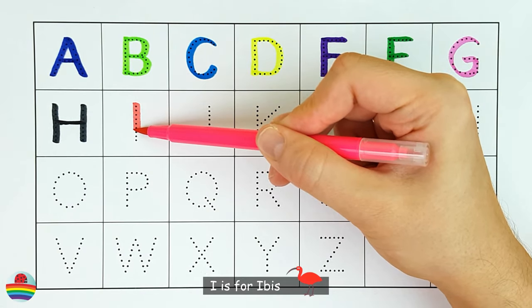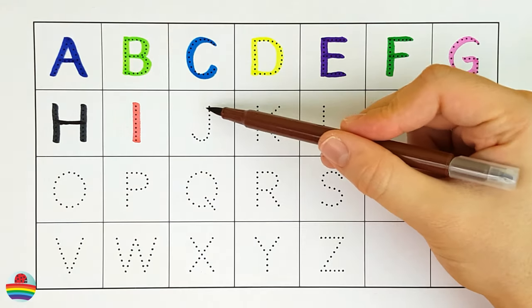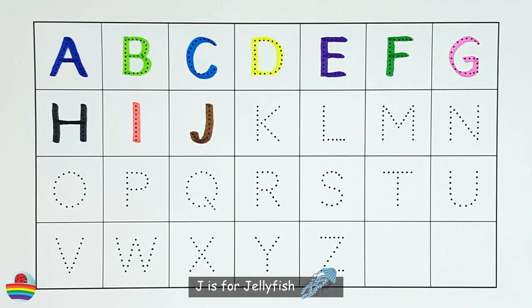I. I is for ibis. I. J. J is for jellyfish. J.